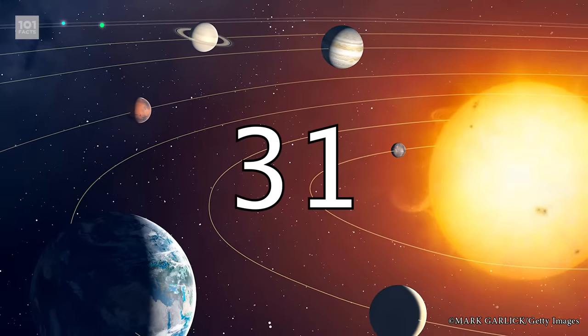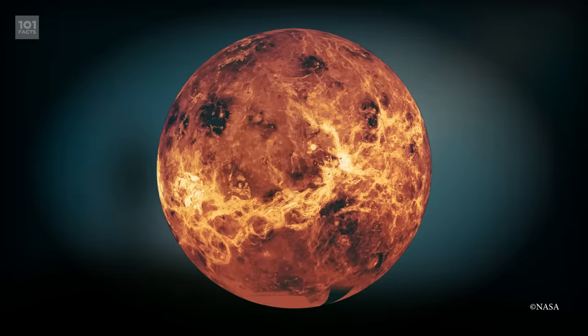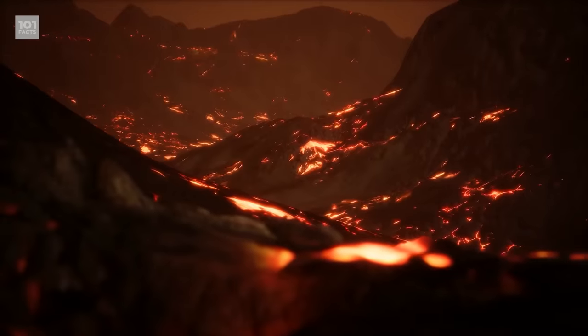There are at least 1,600 volcanoes on Venus. There are probably far more, but they're just too small to be seen from Earth. Scientists believe that most of these volcanoes are dormant, though.